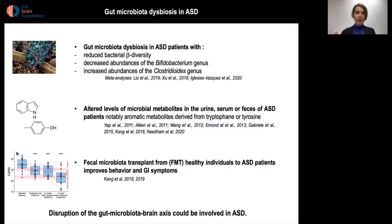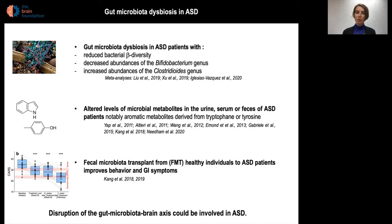Regarding what we know in ASD patients, a number of studies have shown that the composition of the microbiota of ASD patients is different from neurotypical controls or siblings, with reduced bacterial diversity, reduced beta diversity, decreased abundances of the Bifidobacterium genus, and increased abundances of the Clostridiales genus. In addition, levels of microbial metabolites are altered in the urine, serum, or faeces of ASD patients, notably aromatic metabolites derived from tryptophan or tyrosine.